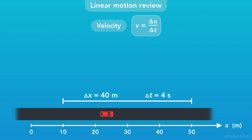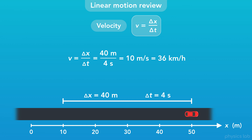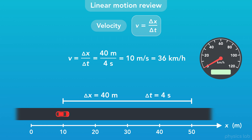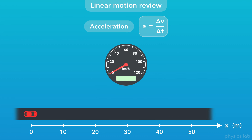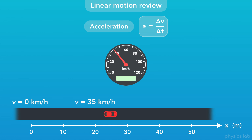Velocity is the displacement divided by time. If this car drove 40 meters in 4 seconds, then 40 divided by 4 would be 10 meters per second, or 36 kilometers per hour. The speedometer, or speed gauge, in the car would show us the speed of the car in the direction that it's moving. Acceleration is the change in velocity over time. If this car starts from rest and then its velocity increases over time, that's acceleration.